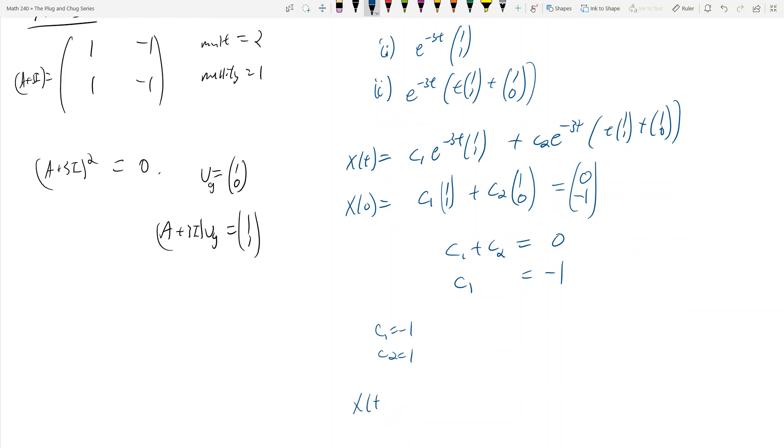And so then we see that x(t) is equal to -e^(-3t)*(1,1) plus, and then c2 is positive 1. And so c2 then is e^(-3t). This becomes t*(1,1) + (1,0).